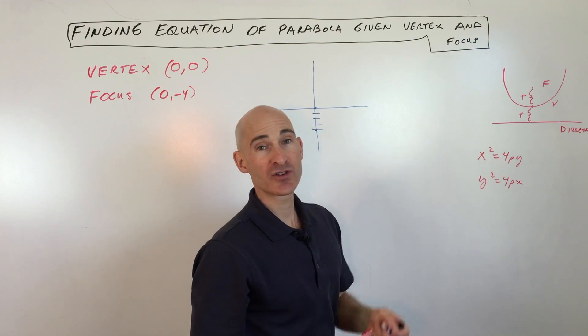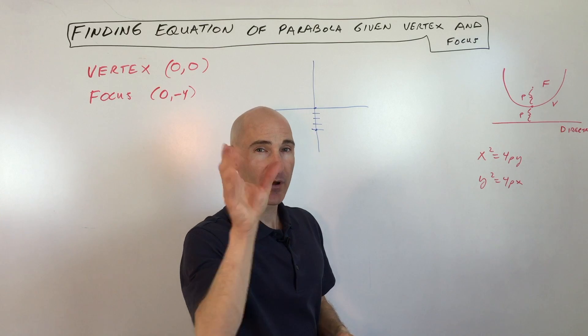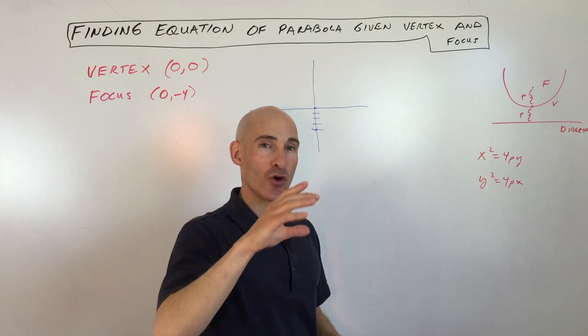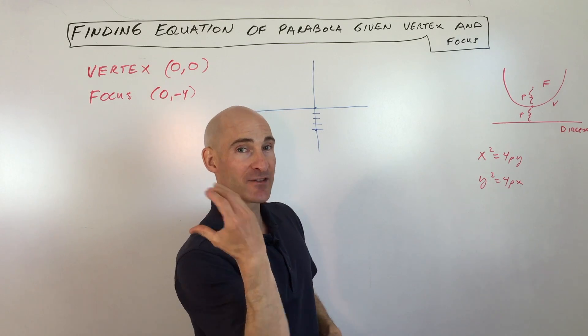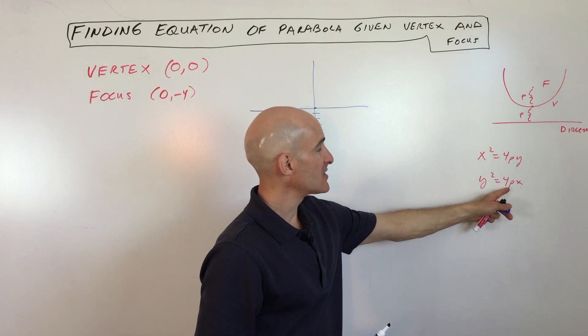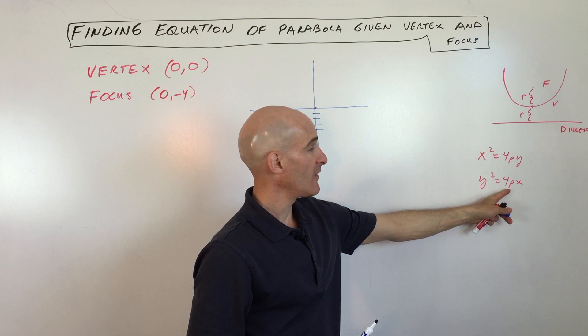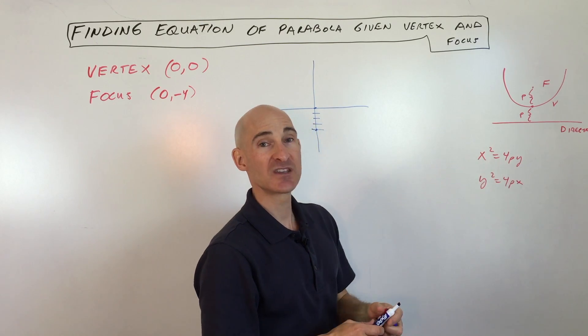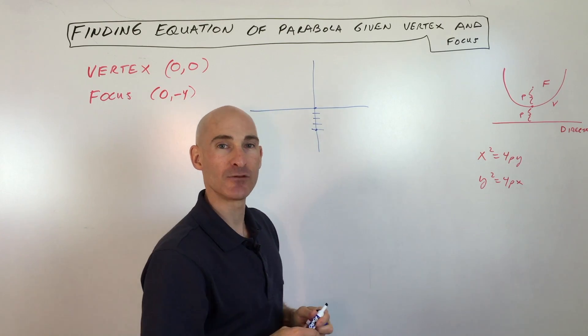If the x is the squared term then it's going to open up or down. If the y squared is the squared term then it's going to open to the right or to the left. And the idea is that if p is positive it would open to the right. If p is negative it would open to the left. If it's this one here x squared, if p is positive it will open up and if p is negative it will open down.